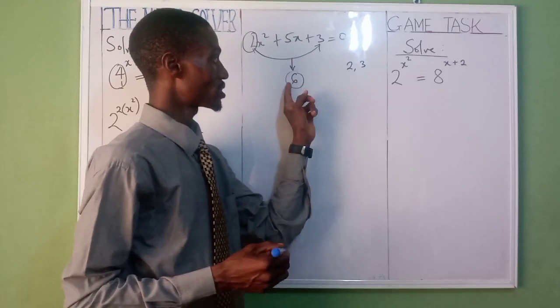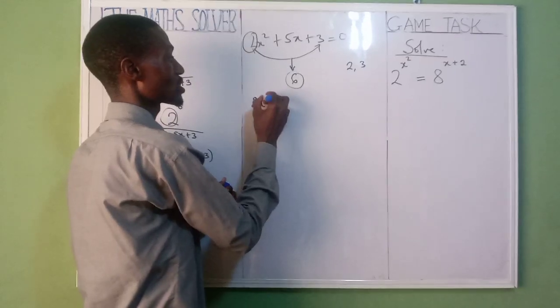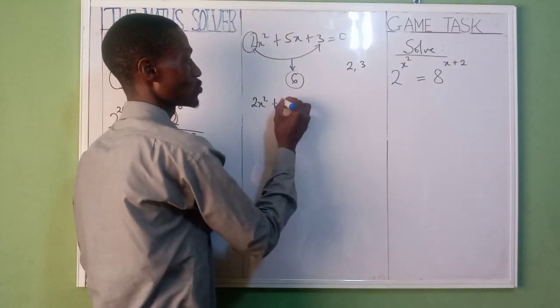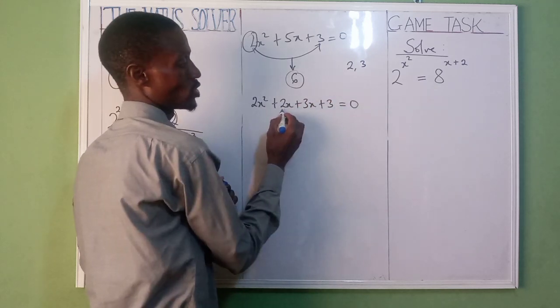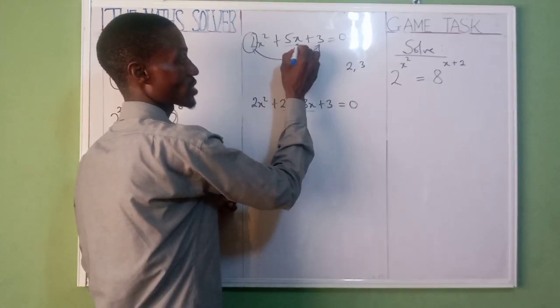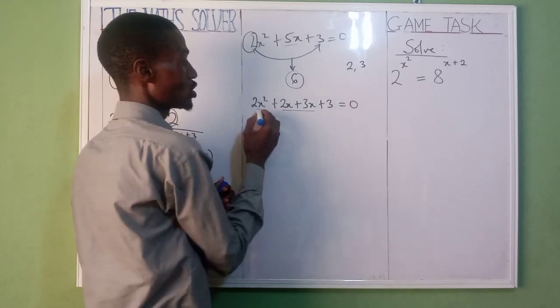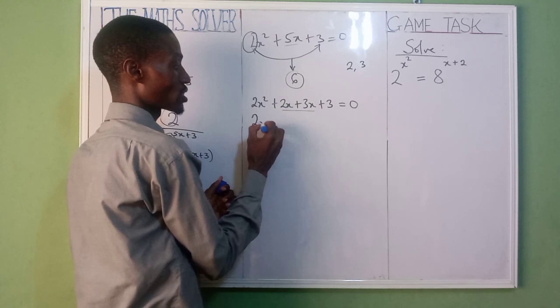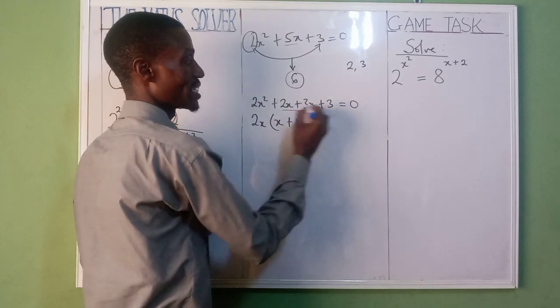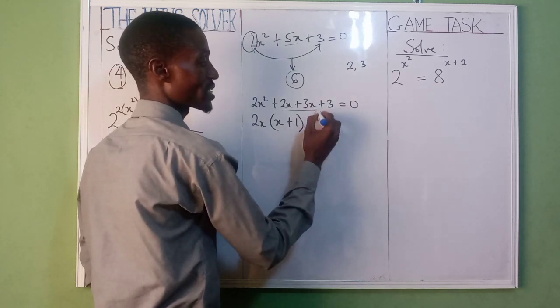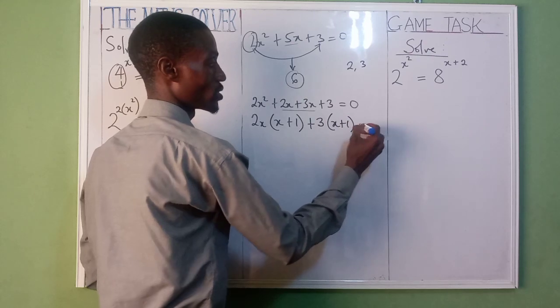2 times 3 is 6, but 2 plus 3 is 5. We have 2x squared plus 2x plus 3x plus 3 equal to 0. 2x is common here, so this remains x plus 1. Then 3 is common, 3 into bracket x plus 1 as well, equal to 0.